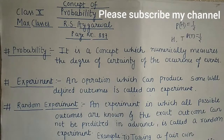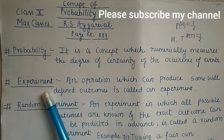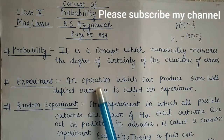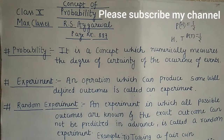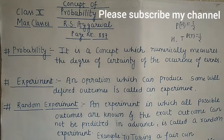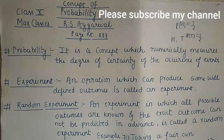Now move to the next definition — experiment. An operation which can produce some well-defined outcomes is called an experiment. That means if we perform any task, like tossing a coin or throwing a dice, we get well-defined outcomes. If we toss a coin, we get head or tail. If we throw a dice, we can get one, two, three, four, five, or six. These are well-defined outcomes from a fixed operation, so we call that an experiment.